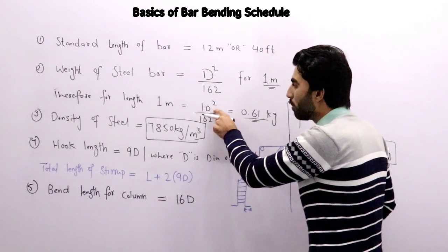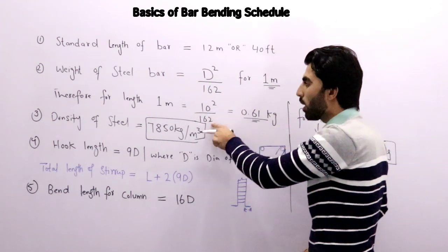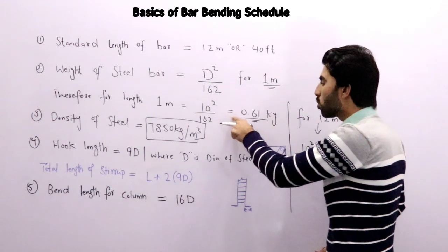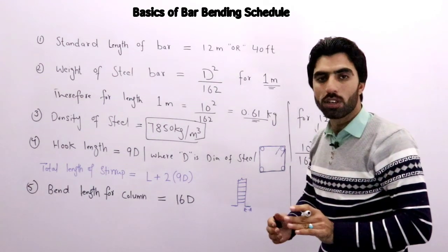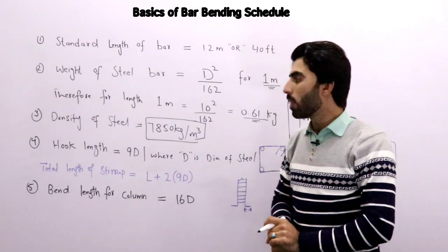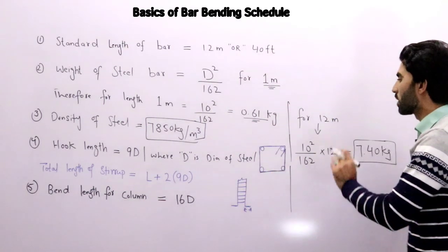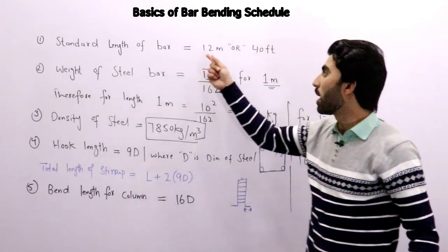If that is 10 millimeter, so in place of D: 10 millimeter squared divided by 162 equals 0.61 kg. 0.61 kg is the weight of 1 meter for 10 millimeter diameter of steel.